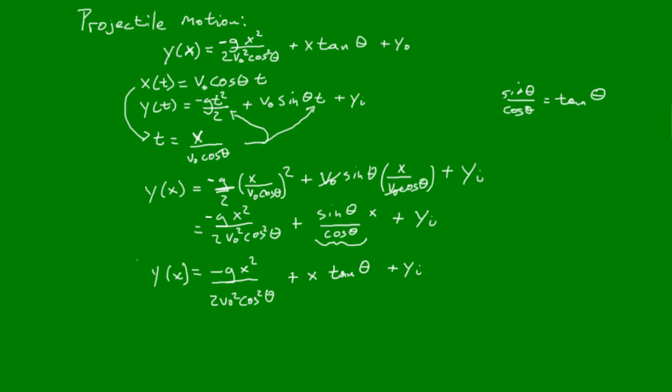And that, right there, gives us the vertical position y of a projectile in terms of its horizontal position x. So if you're asked how high something is when it has gone a certain distance, you can answer it using this equation.